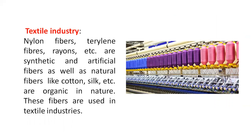In the textile industry, carbon compounds also play a very important role. The manufacture of nylon fibers, terylene fiber, and rayon — these are synthetic and artificial fibers — as well as natural fibers like cotton and silk, are also organic in nature. Synthetic fibers are prepared using chemicals that contain carbon, and natural fibers like cotton and silk also contain carbon. So the role of organic compounds is very important in the manufacture of these fibers.